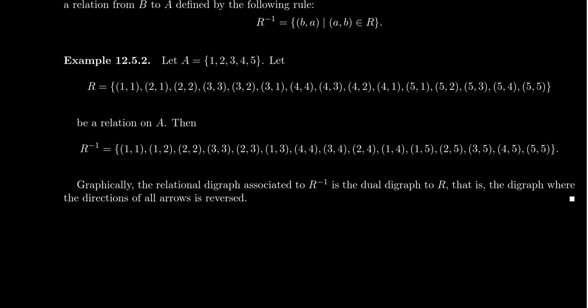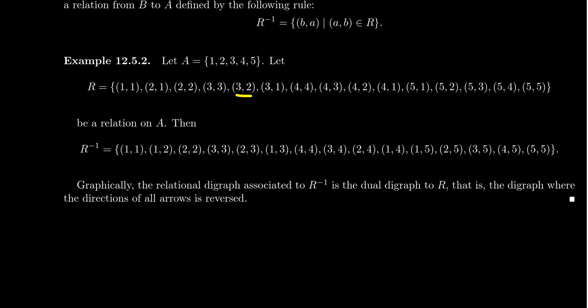Just think of this as an abstract, arbitrary relation. The inverse relation is formed by switching all these ordered pairs around. So (1,1) stays (1,1); (2,1) becomes (1,2); (2,2) stays the same; (3,3) stays the same; (3,2) becomes (2,3); (3,1) becomes (1,3); (4,4) stays; (4,3) becomes (3,4); (4,2) becomes (2,4). Each of these ordered pairs gets switched around, and that's exactly where we get the inverse relation.